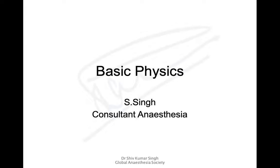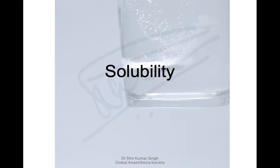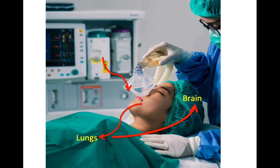In today's lecture we're going to talk about solubility. We all use volatile anesthetics to deliver anesthesia. Volatile anesthetics are delivered through the breathing system, from where they reach the lungs, and from the lungs they reach the brain causing anesthesia. We're going to discuss how this happens and what are the factors that govern it.